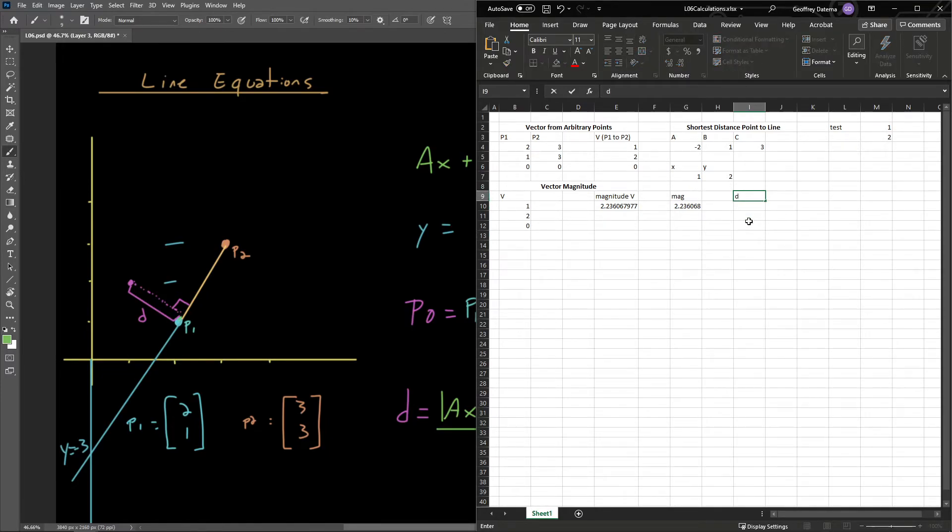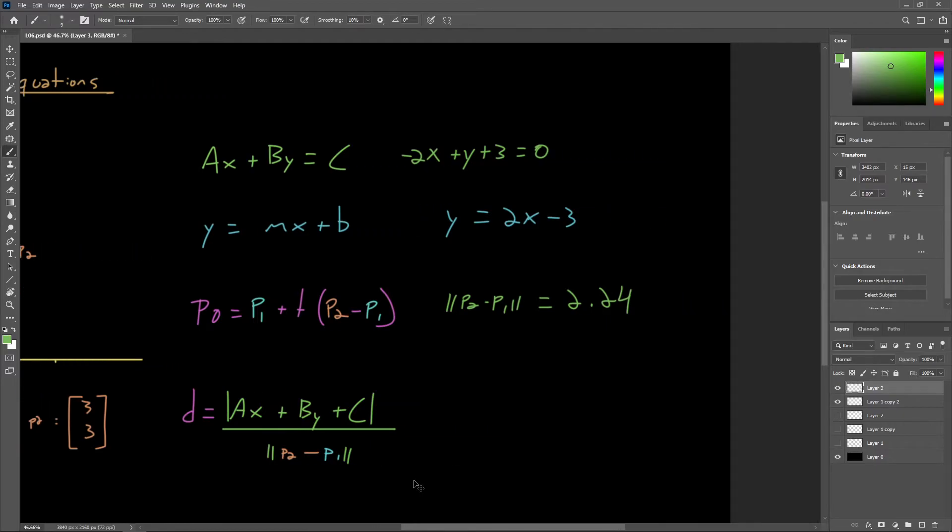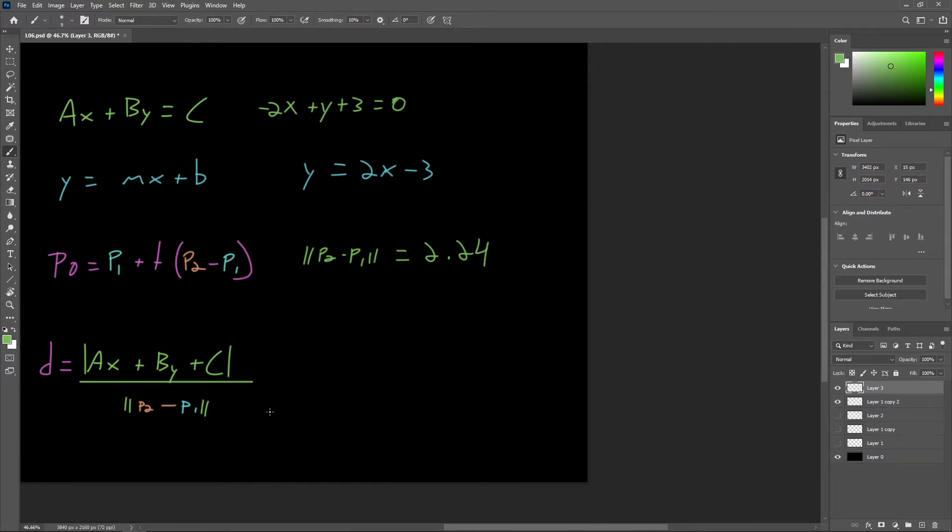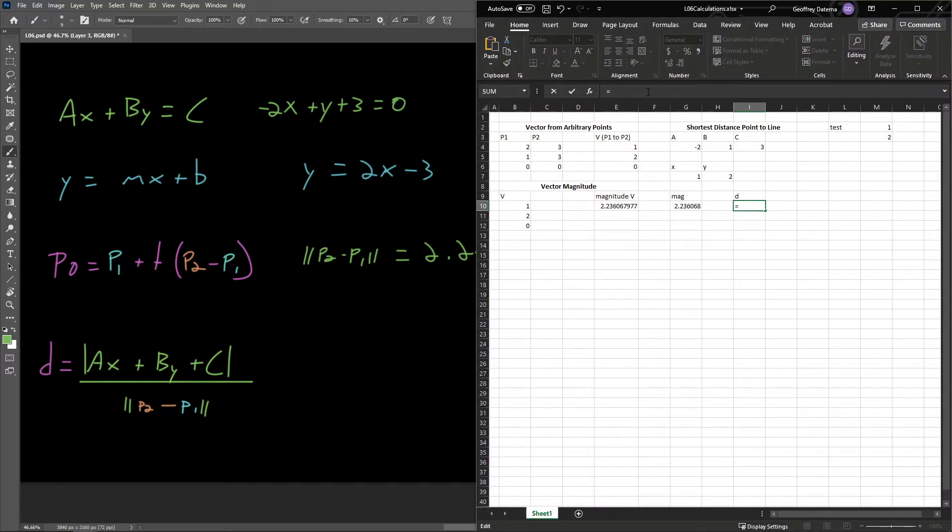Finally, we're going to calculate D. We're going to solve this equation for D and calculate the distance between this arbitrary point in space and the line. So D is going to be equal to the absolute value of A times X plus B times Y plus C, divided by the magnitude, which we have right here. Going ahead and letting Excel do that calculation for us, we can see we end up with a value of around 1.34.